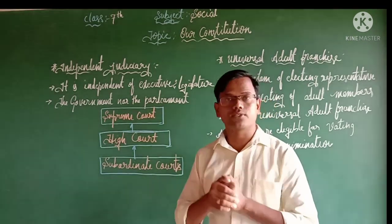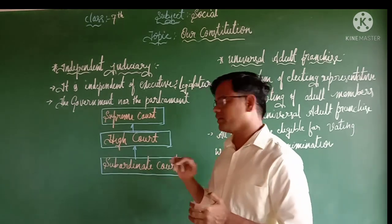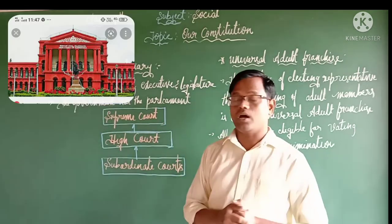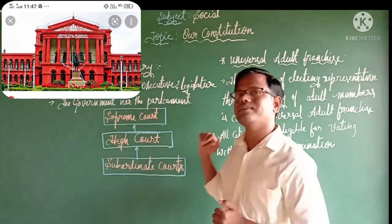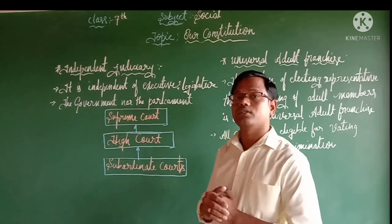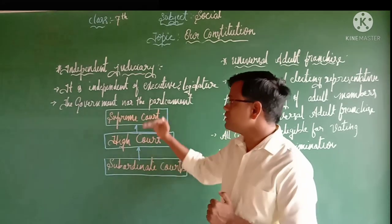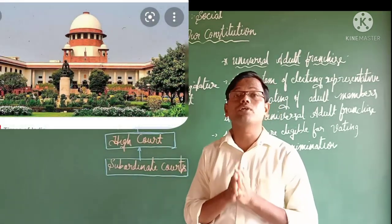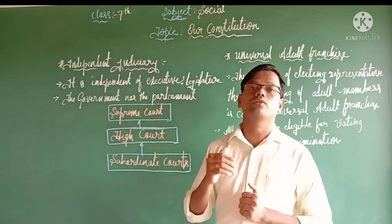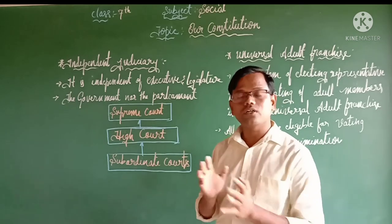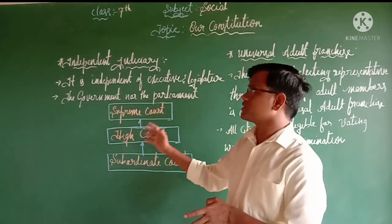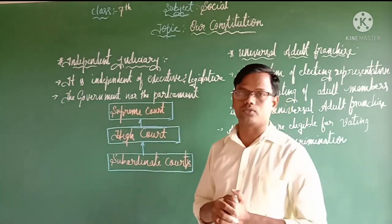If you do not get justice in the subordinate court, there is a chance to appeal to the High Court, which is at the state level. If you do not get justice in the High Court, there is a chance to appeal to the Supreme Court. The Supreme Court is final — whatever decision the Supreme Court gives, that is final, and everyone must abide by it.